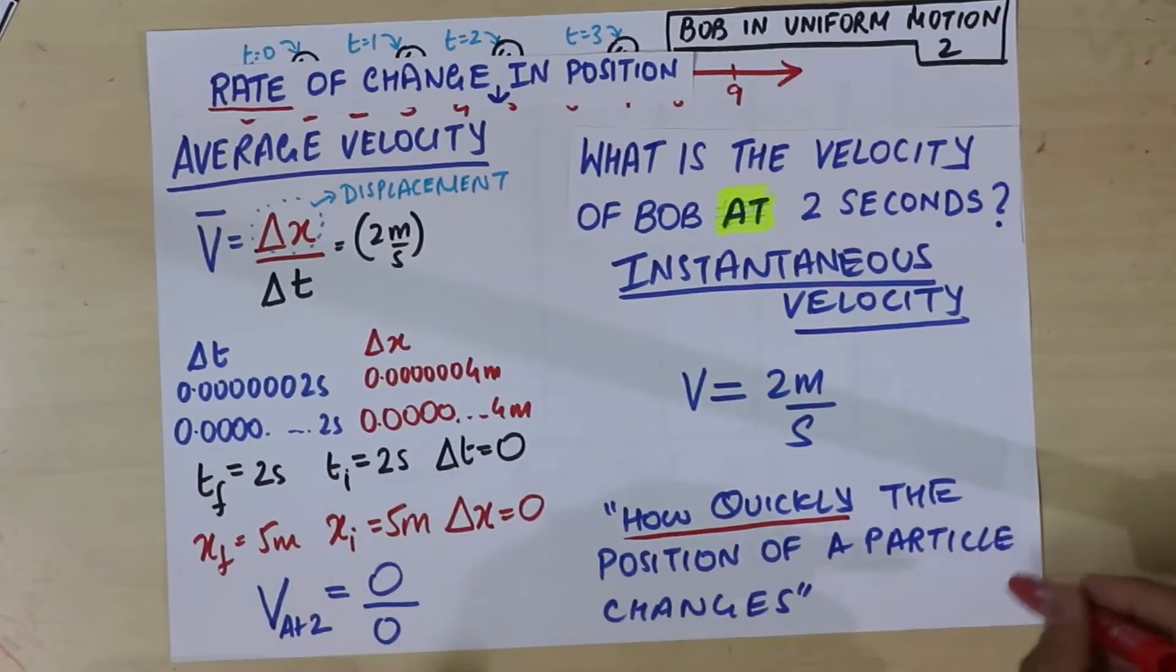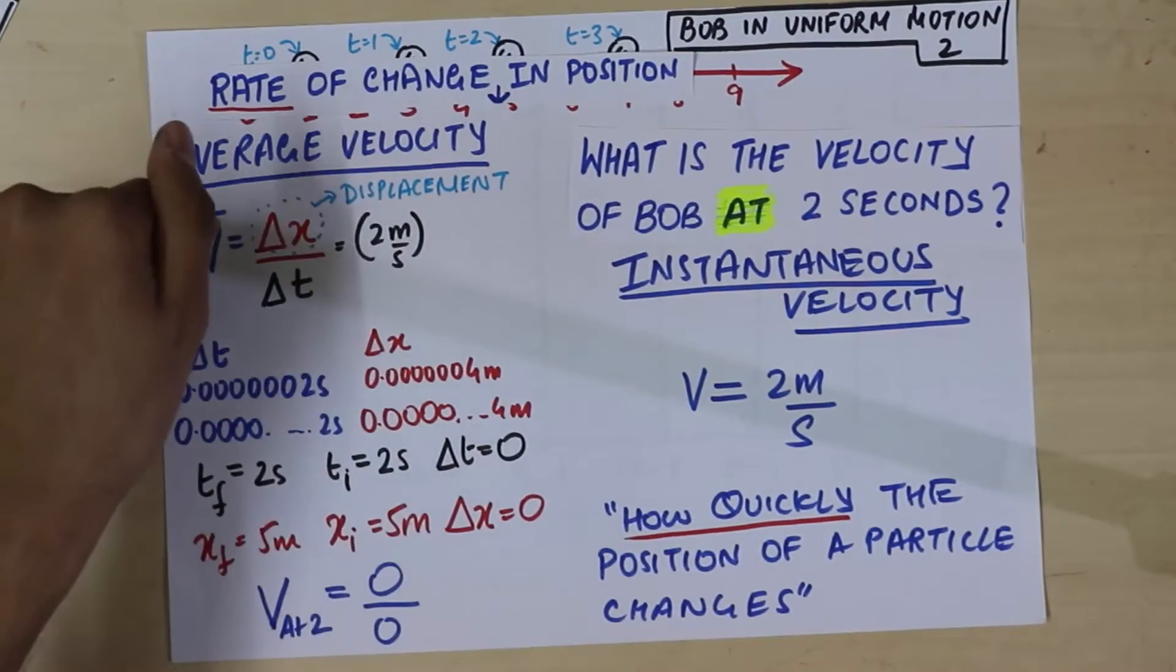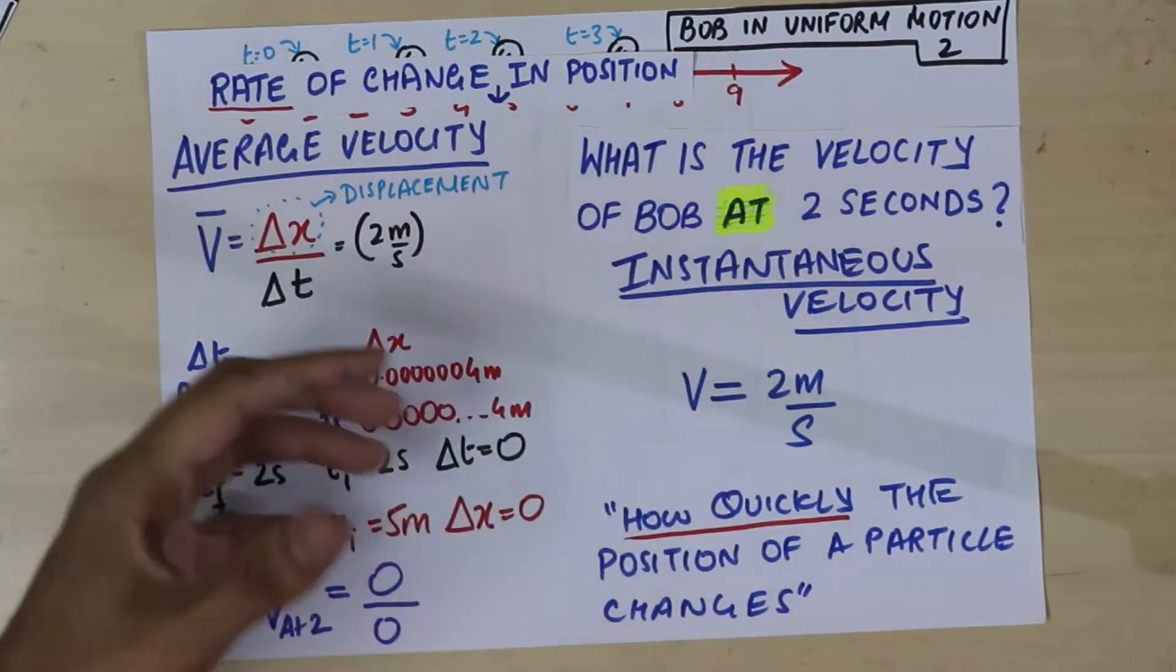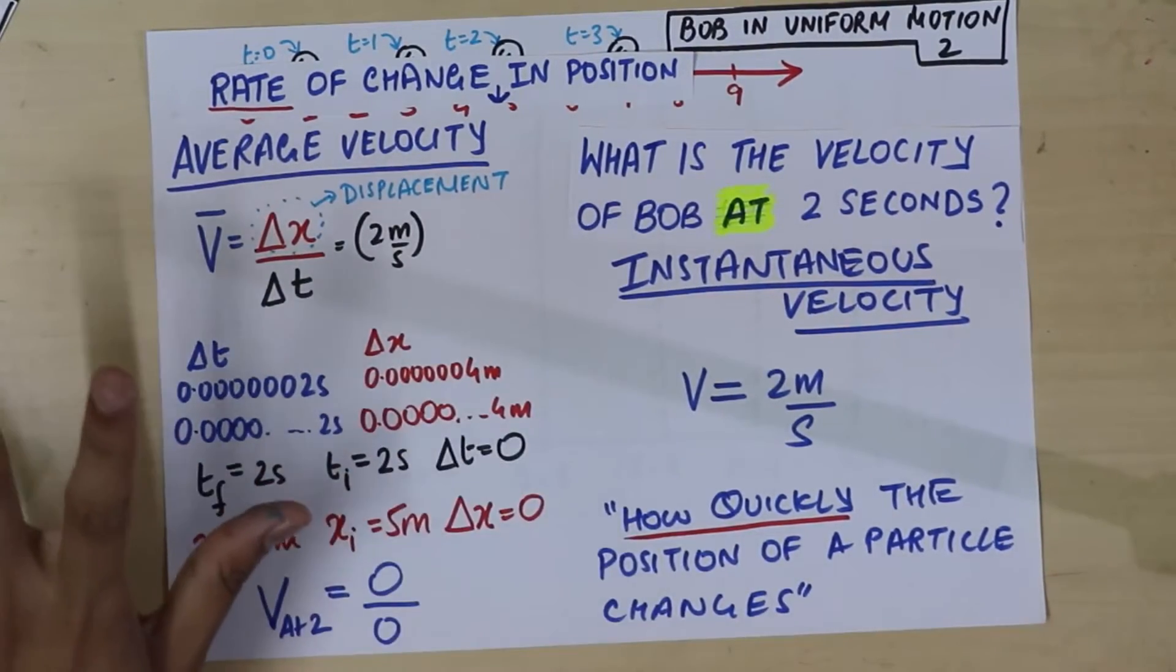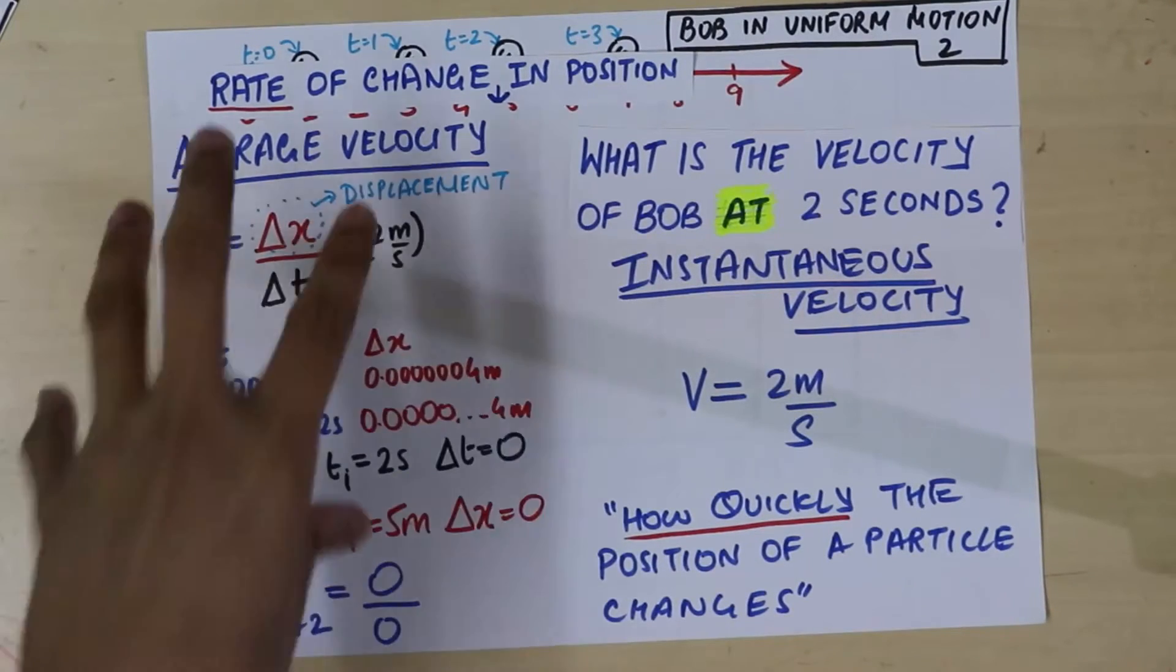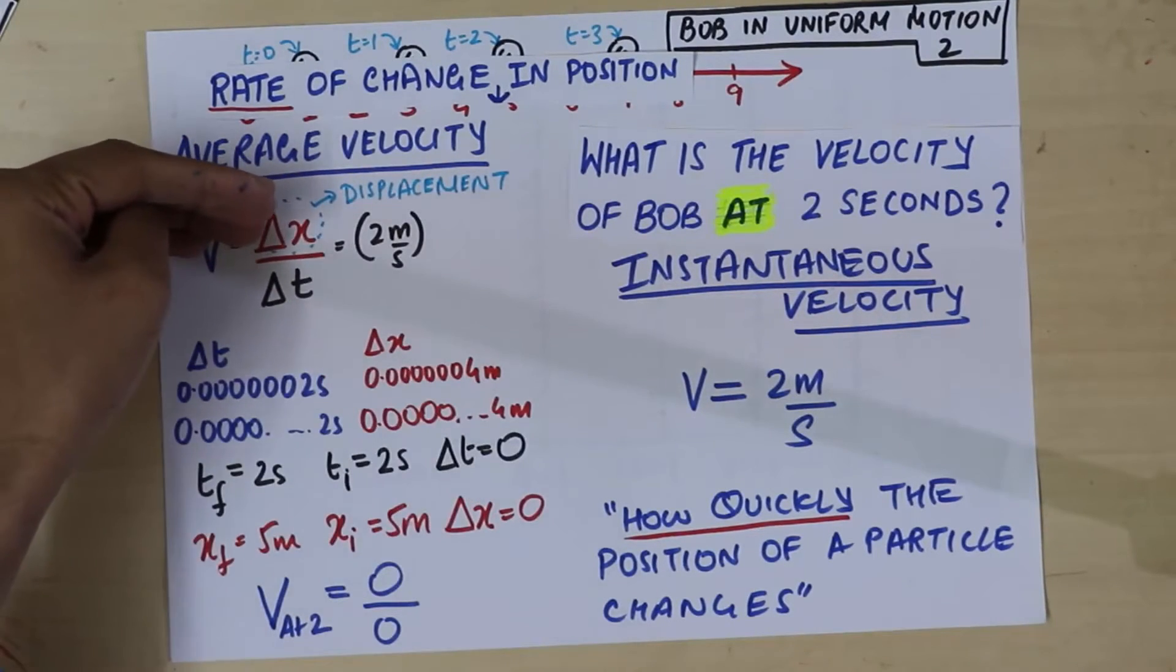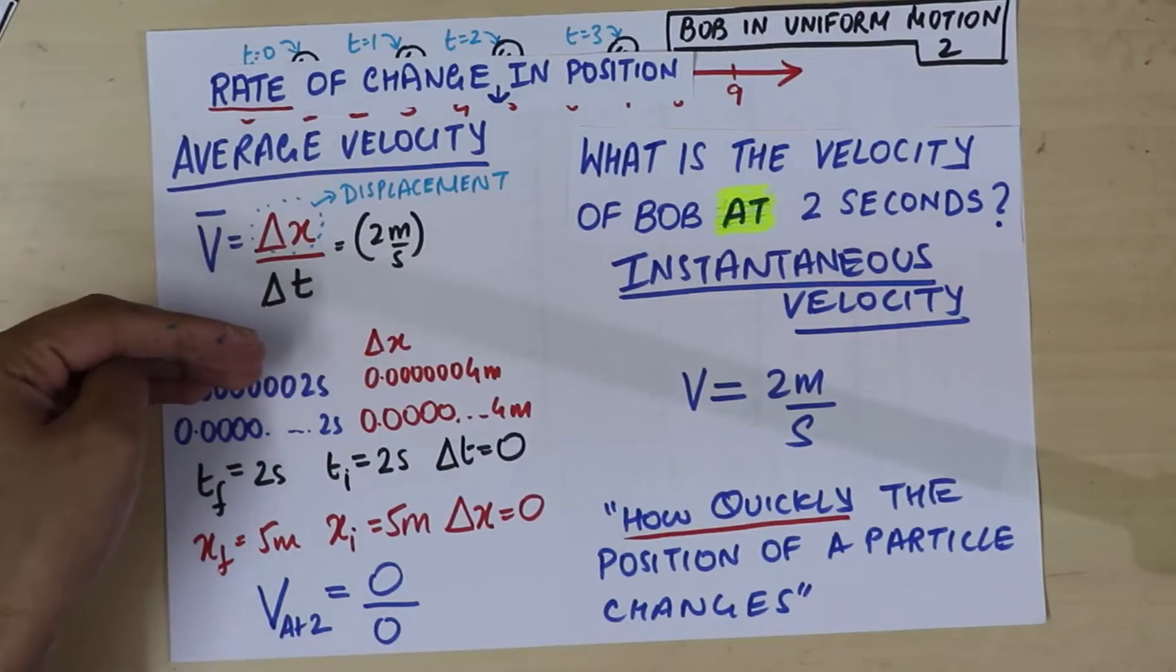So, how quickly the position of a particle changes and that's rate. And there are two kinds of velocities. The average velocity which you can calculate using simple algebra. The math that you know so far from your high school or whatever. Simple algebra. You take the change in position and you divide it by the time taken. That's it.